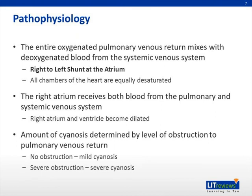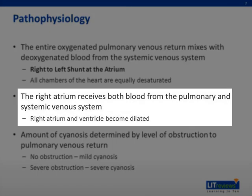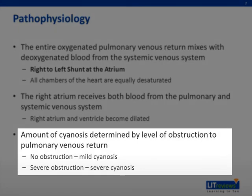The pathophysiology of total anomalous pulmonary venous return is characterized by the entire oxygenated pulmonary venous return mixing with deoxygenated blood from the systemic venous return. This results in total body desaturation or cyanosis due to the right-to-left shunt at the atrium. Because of this, all chambers of the heart are equally desaturated. The right atrium receives blood from both pulmonary and systemic venous return, causing the right atrium and ventricle to become dilated. The amount of cyanosis is determined by the level of obstruction: when there is no obstruction there is mild cyanosis, but with severe obstruction there is severe cyanosis.